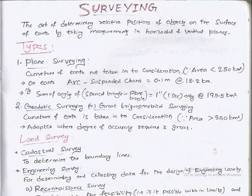Surveying is the art of determining the relative position of objects on the surface of Earth by taking measurements in horizontal and vertical planes. Types include plane surveying, where curvature of the Earth is not taken into consideration for areas less than 250 square kilometers, and geodetic surveying or great trigonometrical surveying, where curvature of the Earth is taken into consideration when area is greater than 250 square kilometers and degree of accuracy required is great.